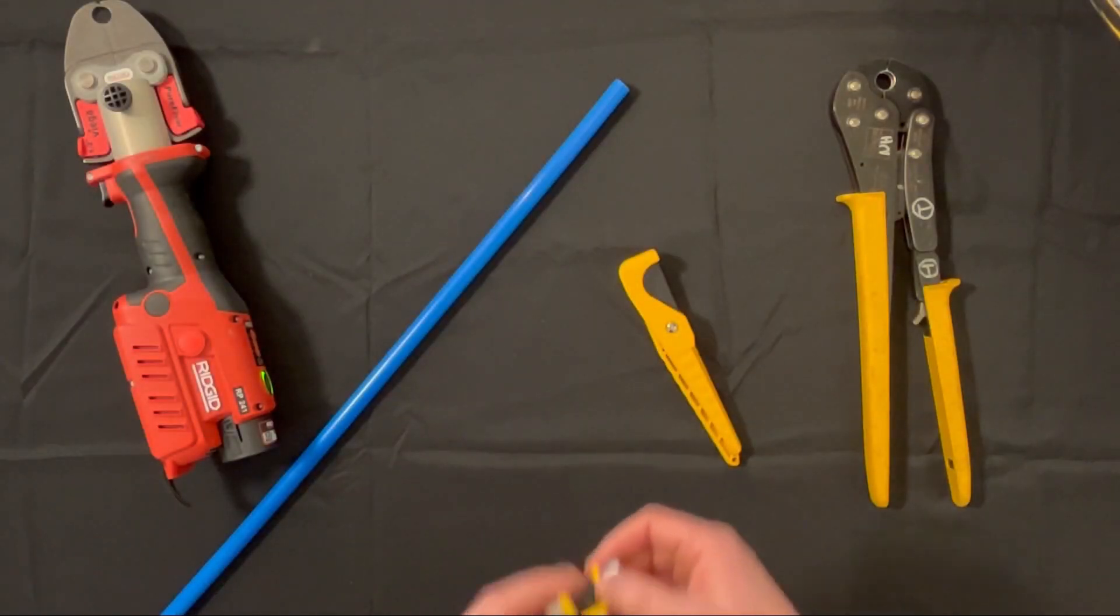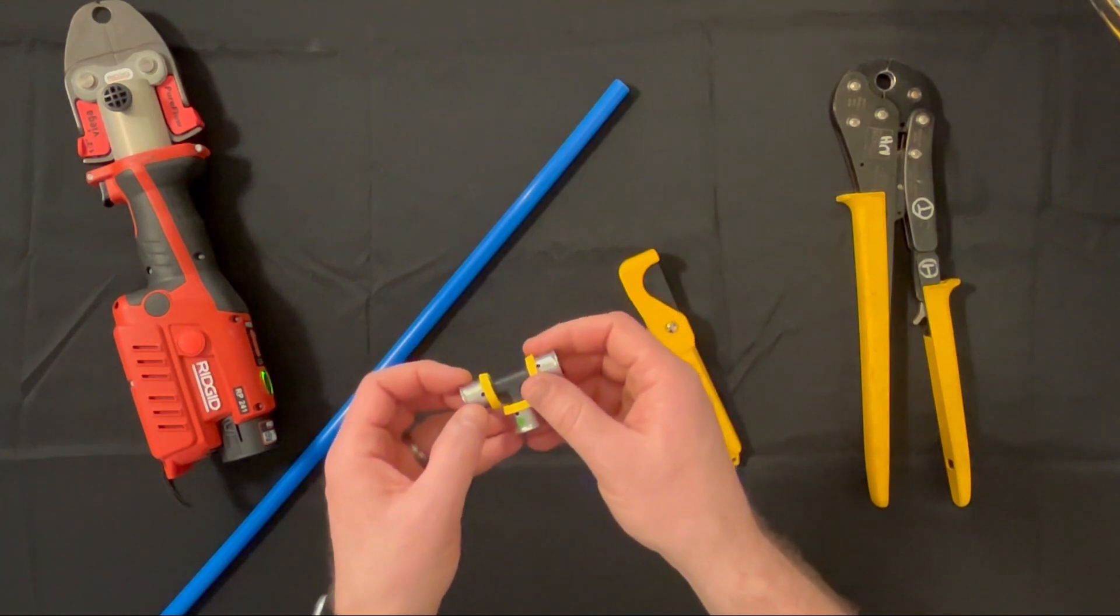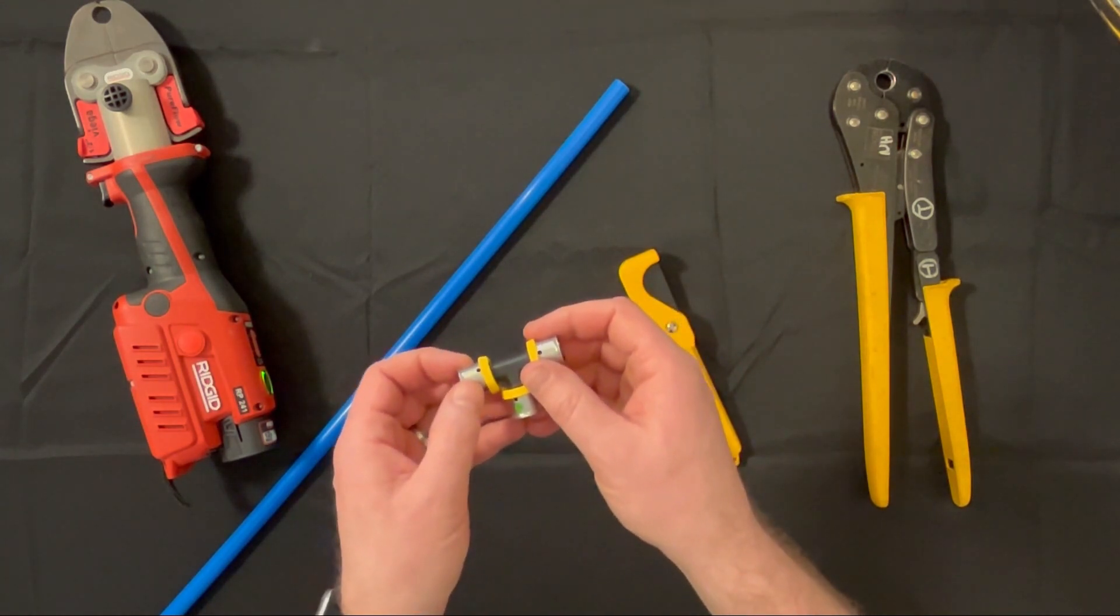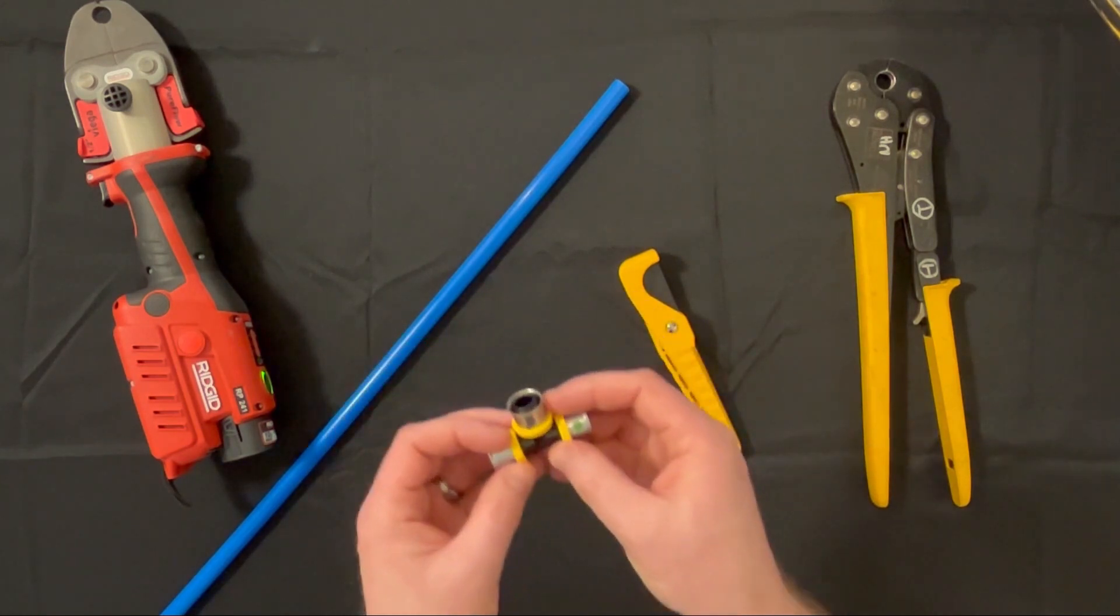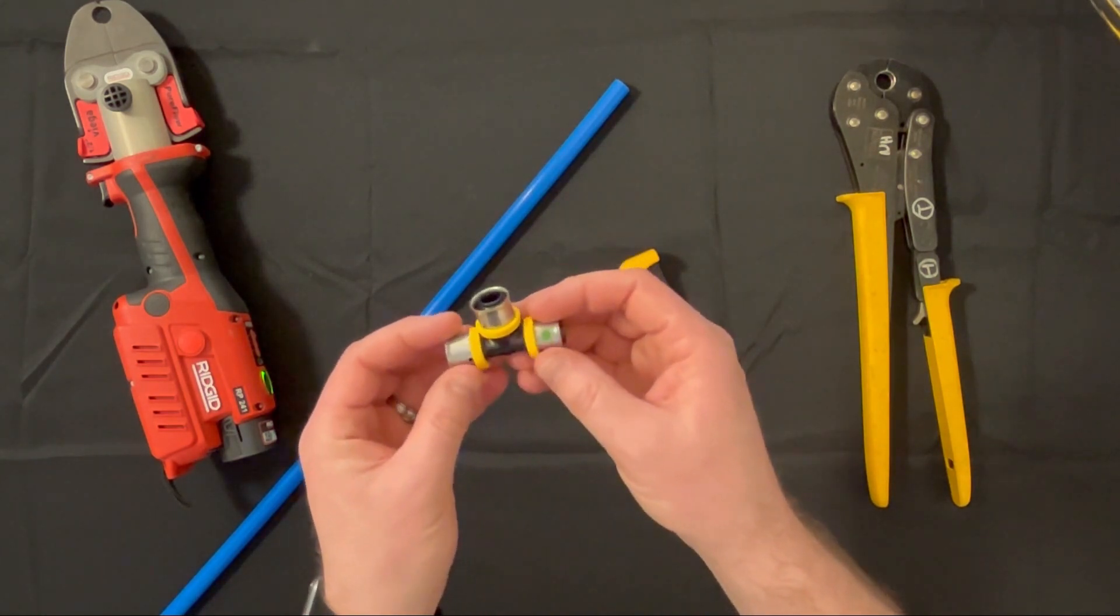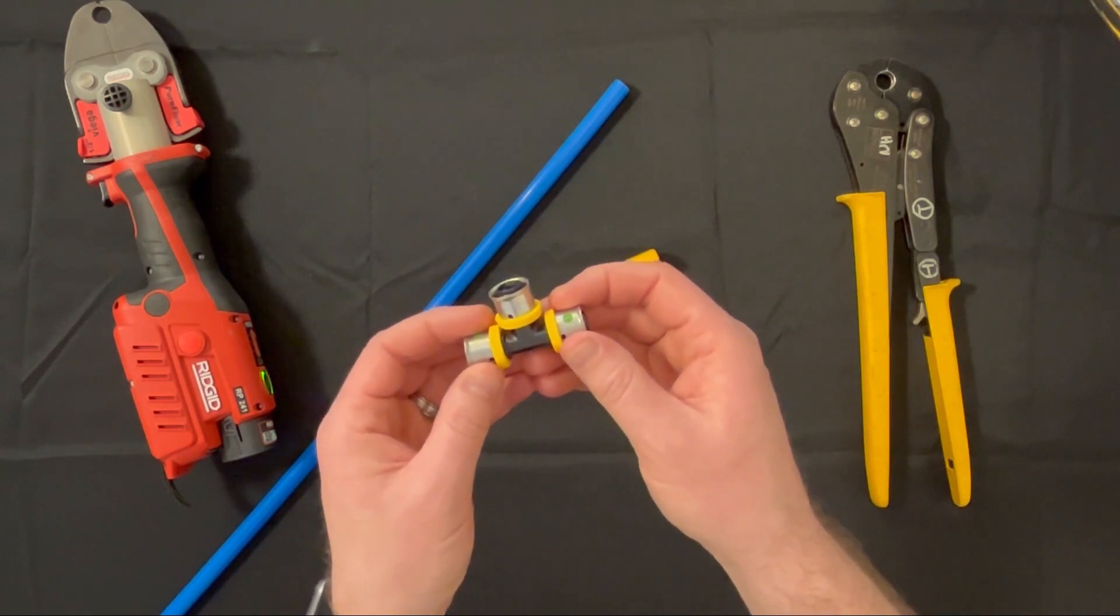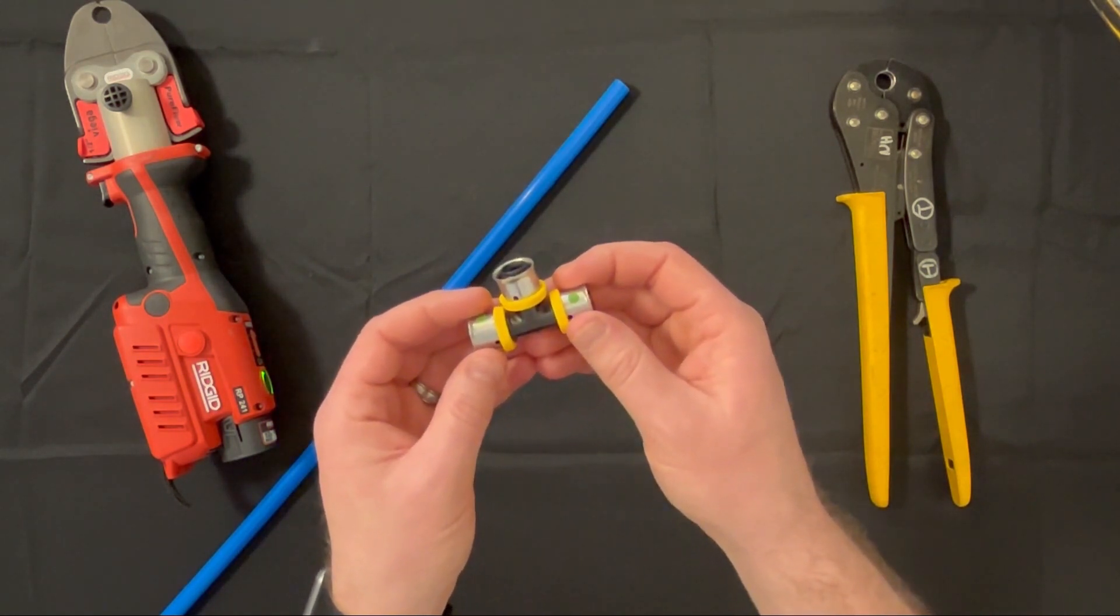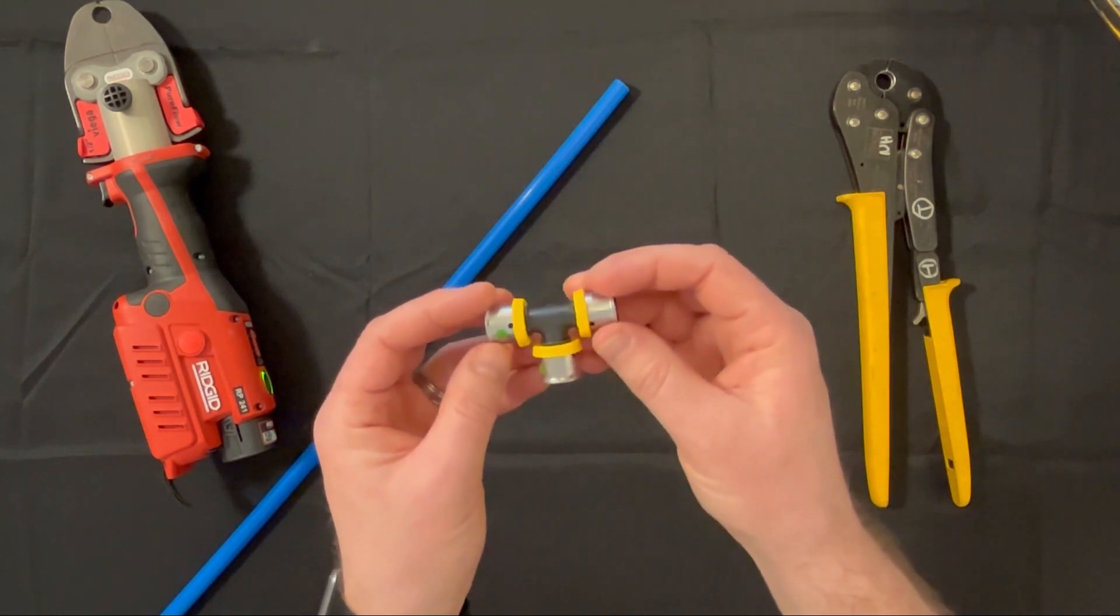Today we are here to review the proper installation procedures for ASTM F3347 or 3348 fittings. These are insert fittings, either metal or plastic, with factory assembled stainless steel sleeves for SDR9 PEX or PERT.